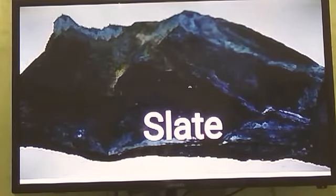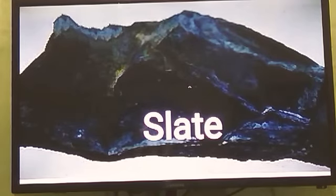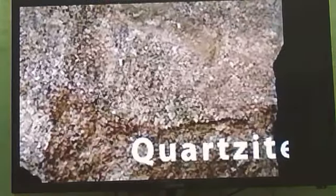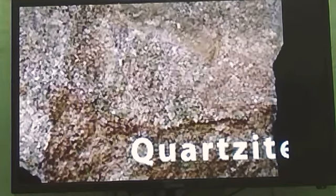Slate is formed from the sedimentary rock shale. It is used for making roofs of houses — in hilly areas, roofs are made of slate. Slate and blackboards can also be used for writing purposes. This rock is grey or black in color and quite shiny. Next is quartzite, which is formed by metamorphosis of sandstone, a sedimentary rock. It is very hard, so it cannot be used for making buildings, but it can be used for making statues.